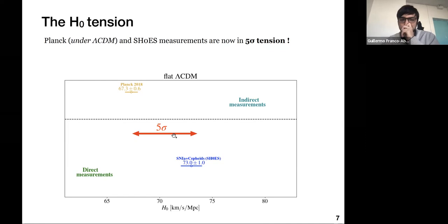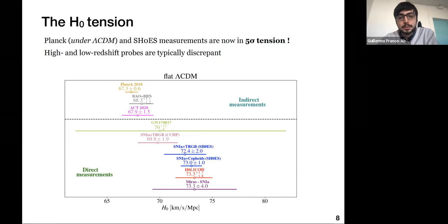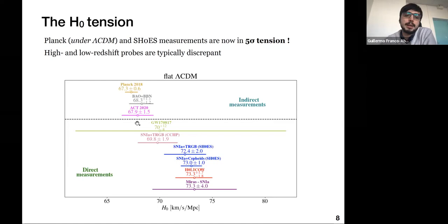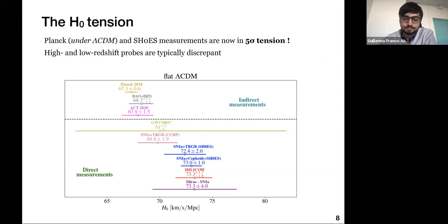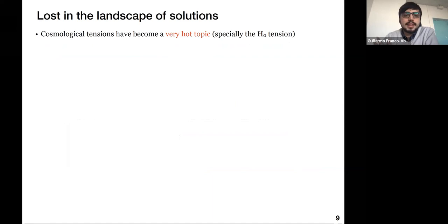With the new results by the SH0ES collaboration published only seven weeks ago, this tension has reached the warning level of five sigma. However, these are not the only measurements of the Hubble constant — we have many more nowadays. From this selection, we notice it's not as simple as saying there might be systematics in Planck or in SH0ES, because other CMB experiments such as ACT, the Atacama Cosmology Telescope, also find small values of the Hubble constant.